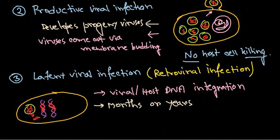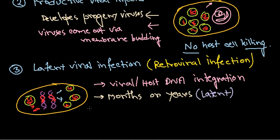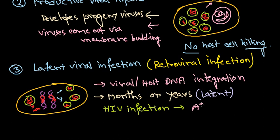For a long period of time, the integrated virus remains as it is, and after a certain time it will develop into progeny viruses carrying all the necessary nucleic acid material, which can then come out. That's why it's called latent — it's kind of paused for months or years. HIV infection is an example of this latent viral infection.